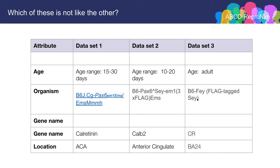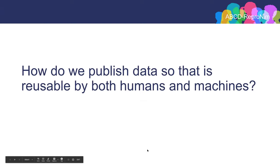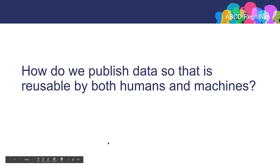But if I look across the datasets: B6-PAC6, B6-CG-PAC6 — is this in fact the same animal or not? Is calretinin and calbindin-2, or calb-2, the same gene or a different gene? What is CR? So there's a lot of information here that is human readable, but the computer would have a really hard time understanding that these three datasets describe the same mouse, the same genes, and the same brain regions — just with different abbreviations. The question then is: how do I publish data so that it is reusable by both humans and machines? And that is where the topic of this lecture comes in — the FAIR data principles.